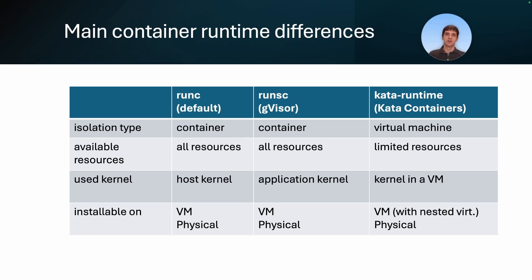When you are using containers, a process inside a container can see all the resources on the host. It doesn't mean that process can use those resources — it only means it can see how much memory and how many CPUs you have. You can set CPU or memory limits, and if the process tries to use more memory than allowed the OS will kill it. When running a virtual machine, you assign a specific amount of CPU and memory to the VM, and the process inside sees only that.